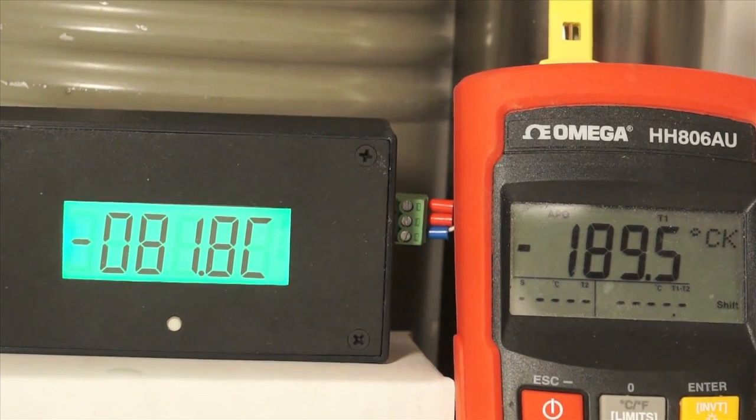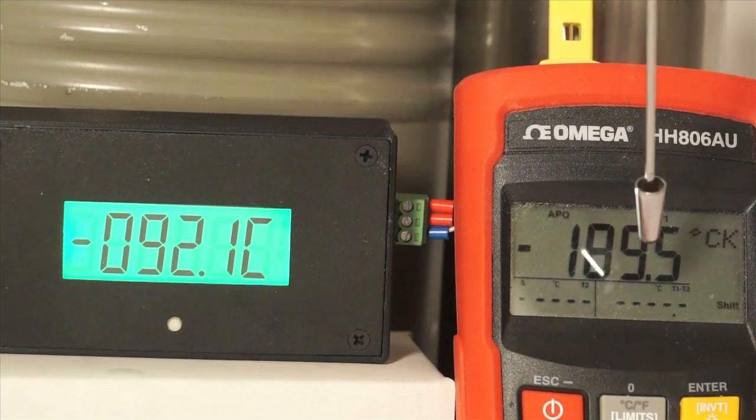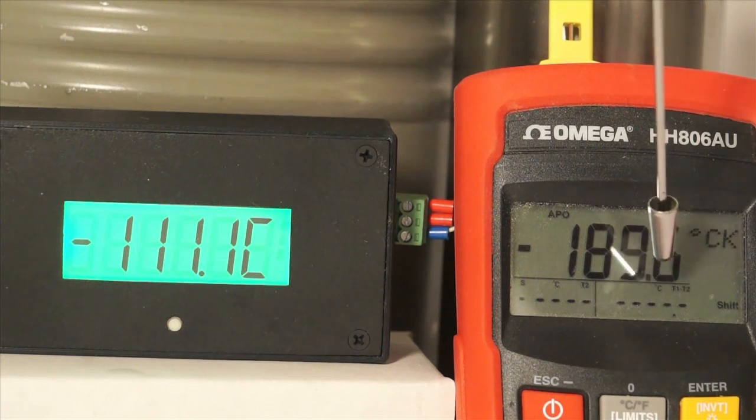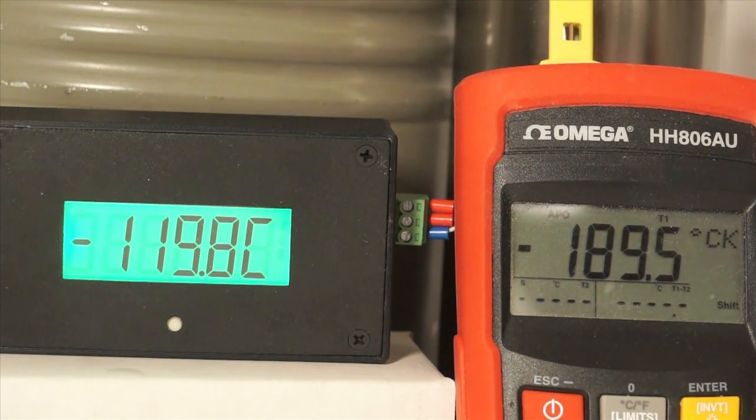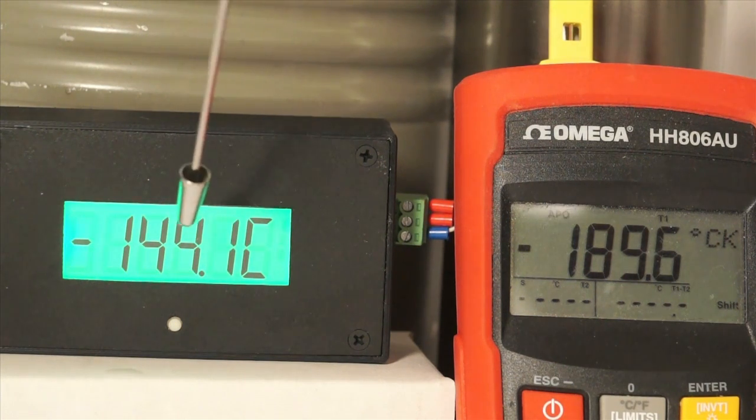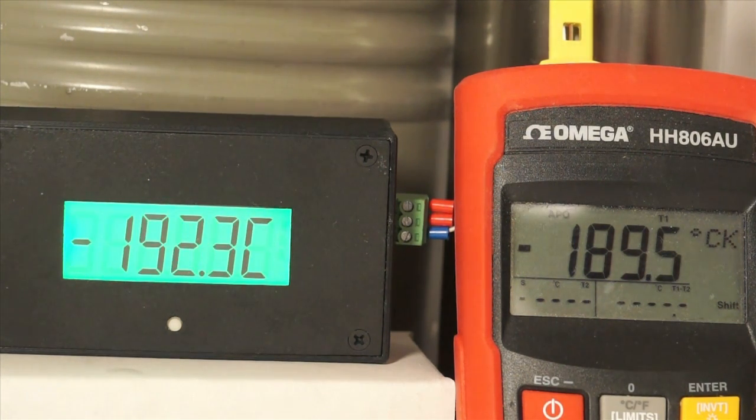You'll notice that the Omega settles at a temperature of about minus 189 centigrade. The Crybaby will rapidly approach its true temperature of minus 195.